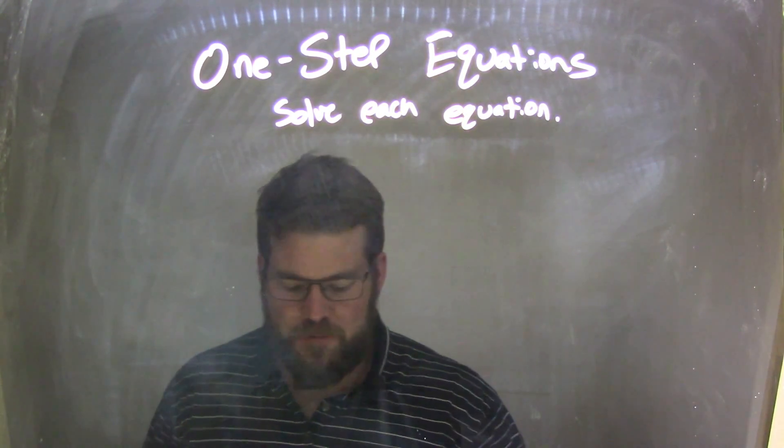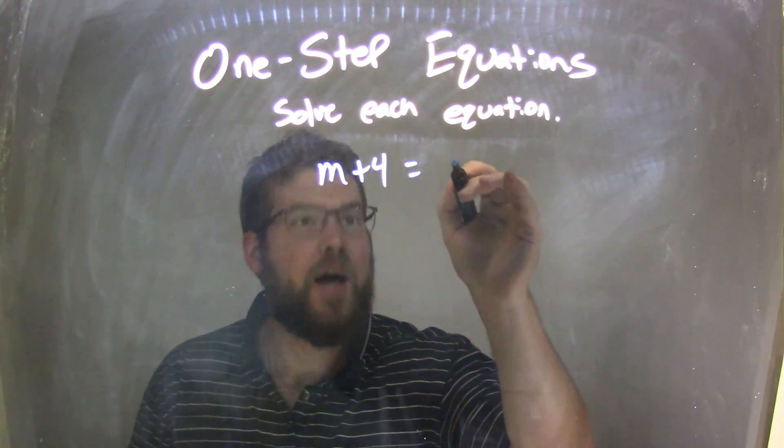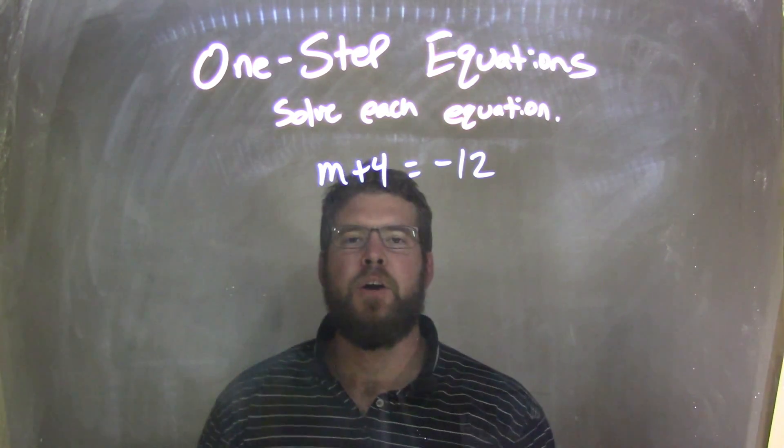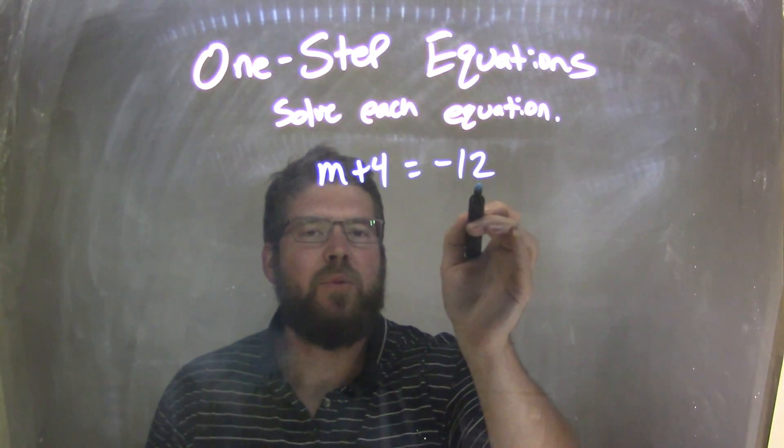If I was given this equation: m plus 4 equals negative 12. Well, this is a pretty simple one-step. I have m plus 4 equals negative 12.